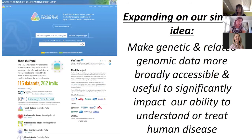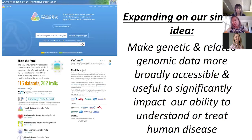The Common Metabolic Disease Knowledge Portal is aimed to really expand on our simple idea. Over the past six years or so, what we've been trying to do in genetics of type 2 diabetes and common metabolic disease is make genetic and related genomic data more broadly accessible so that we can have an impact on human disease and biology. The goal is to bring relevant genetic data sets — GWAS, sequencing — together with annotations and layer them in a way that a non-expert user can make sense of them.